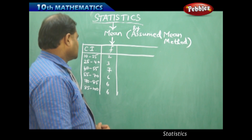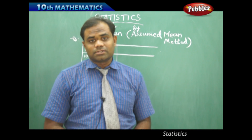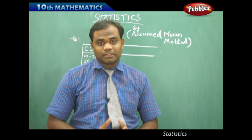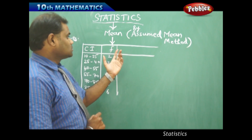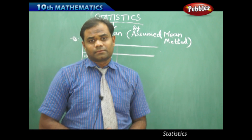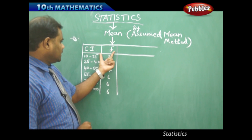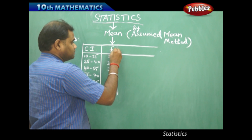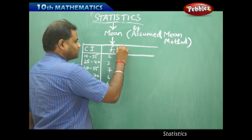Let's see how we can find the mean using the assumed mean method. This is one of the methods through which we can find the mean. We use this method usually when the values of fi or xi are very large — that is, when we find the mid-value xi and those values become very large.